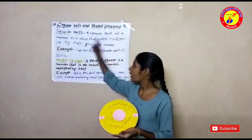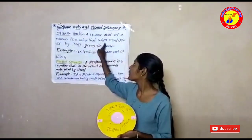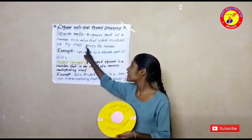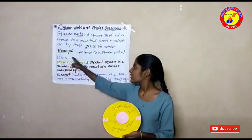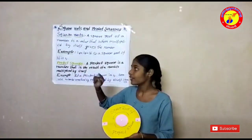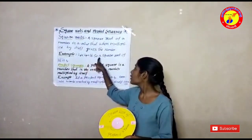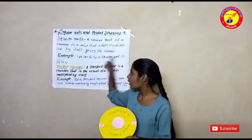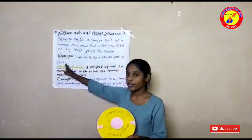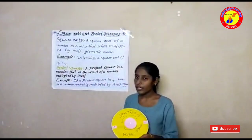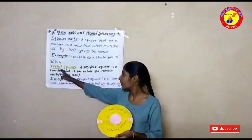A square root of a number is a value that, when multiplied by itself, gives the number. For example, 5 into 5 is equals to 25, so the square root of 25 is equals to 5.